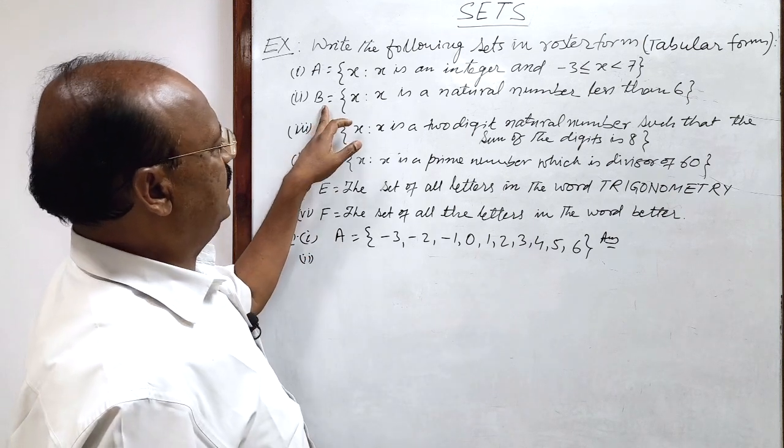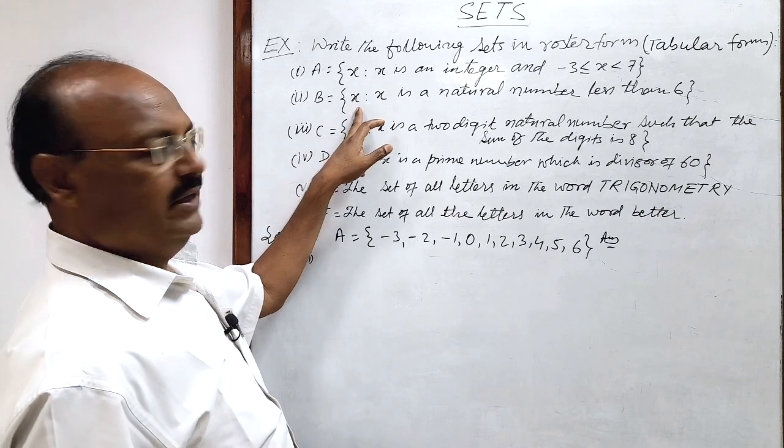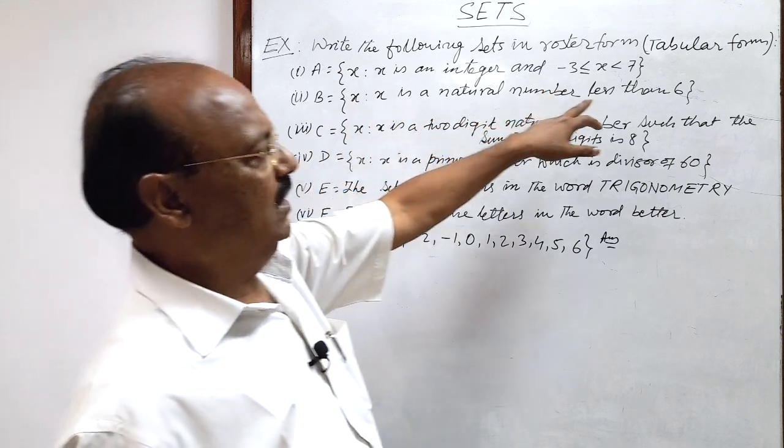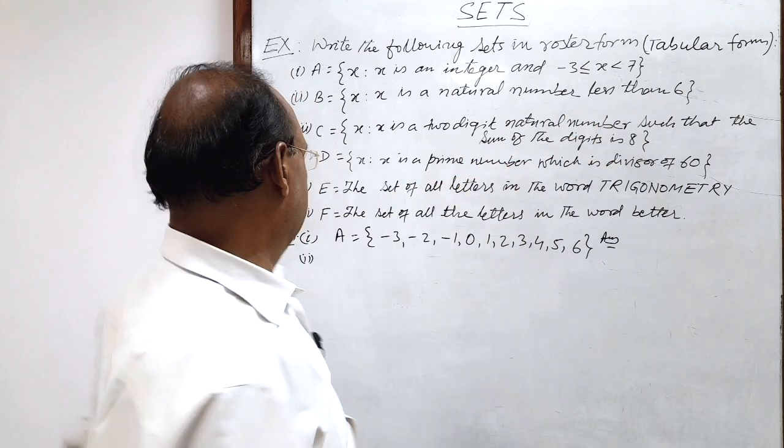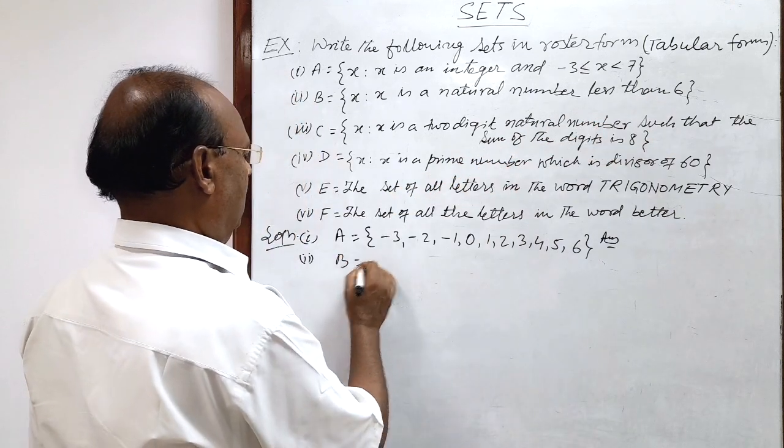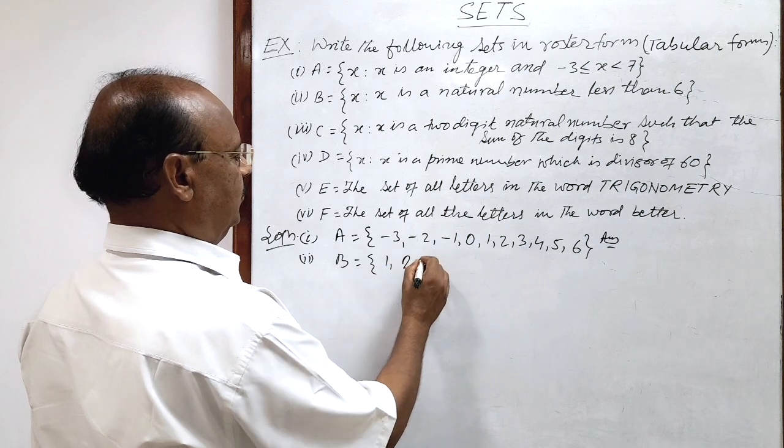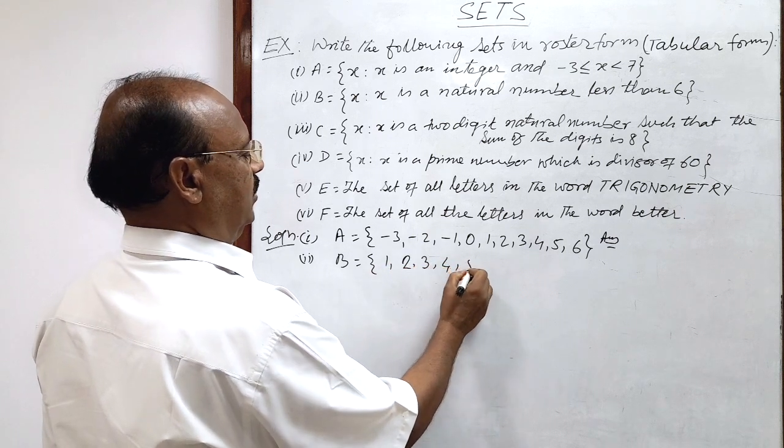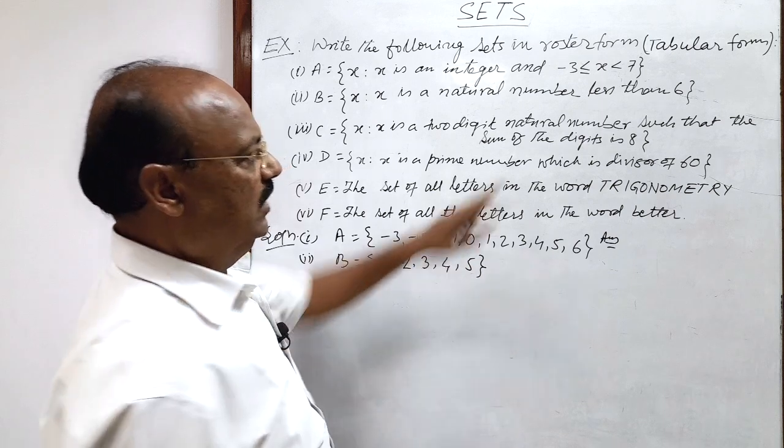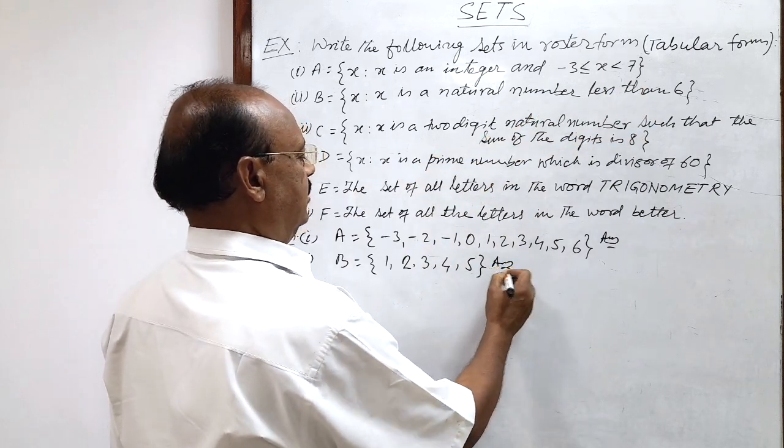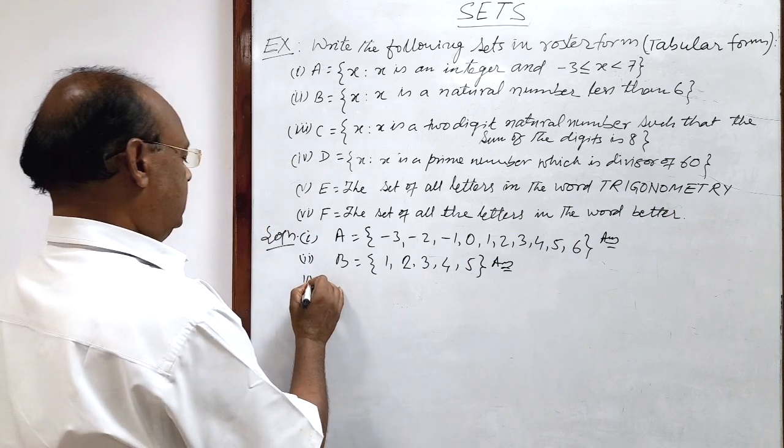Second question. Here, B is a set consisting of element x such that x is a natural number less than 6. Very simple. Natural number less than 6 means 1, 2, 3, 4 and 5 less than 6. So this is the answer for the second part of the equation. Now let us see the third part.